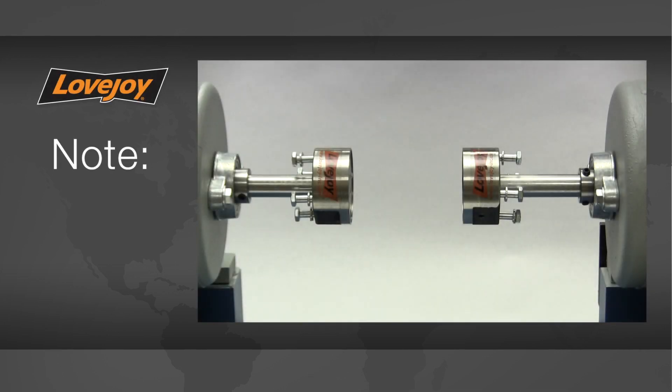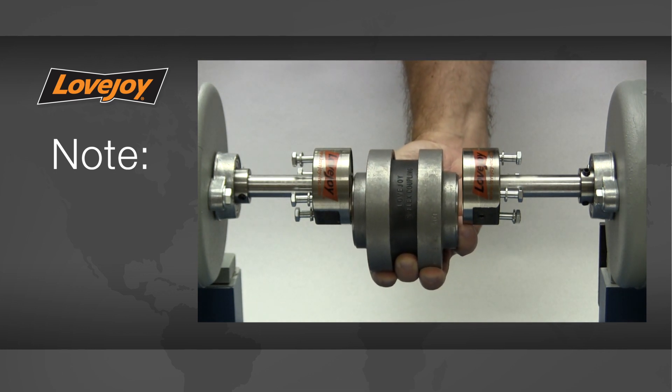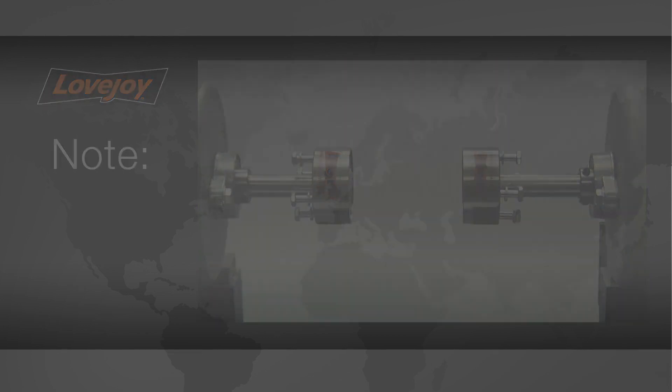Besides spanning shaft separations greater than the standard S-Flex endurance coupling, an additional feature of the S-Flex endurance spacer coupling is that the spacer flange and sleeve can be installed as a dropout sub-assembly. This means the equipment does not necessarily need to be moved to install a coupling. We will take advantage of this benefit and install this coupling with the equipment already in place.